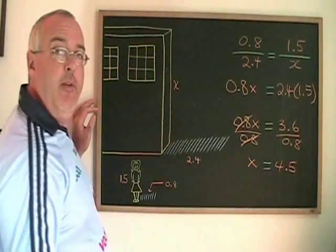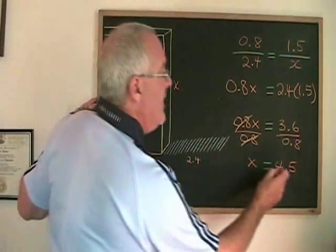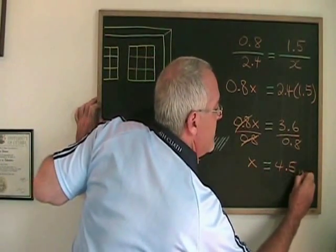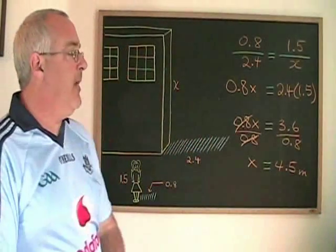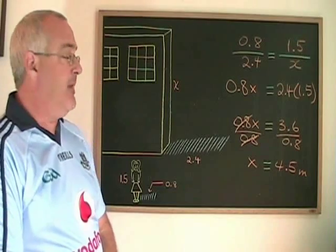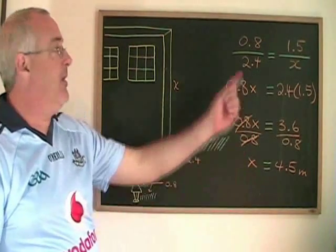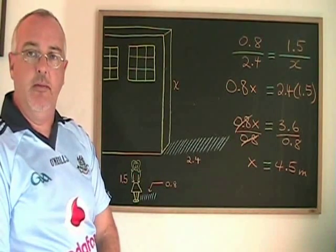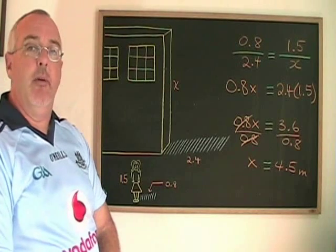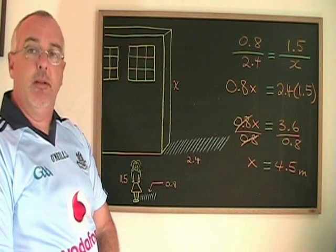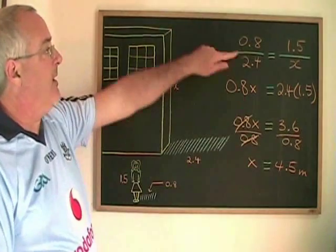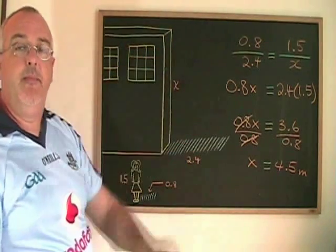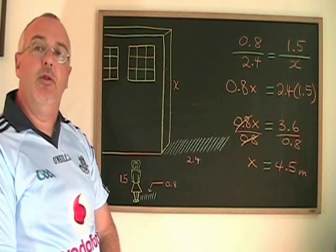If the unit of measure given in the problem was meters, then x is equal to 4.5 meters. If we were asked to give the height of the school, we have our final answer and we are showing all of our calculations. And if we were asked to give the proportion that could be used to solve for the height of the school, that is this equation right here. This is how we do shadow problems.